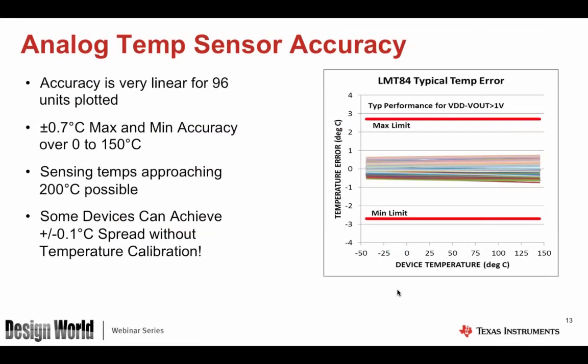While datasheets may show limits of around ±2.7°C, in practice the actual performance of typical devices is much better. You can get devices with ±0.7°C accuracy up to 150°C, sense temperatures up to 200°C, and achieve matching of 0.1°C without calibration in some cases.